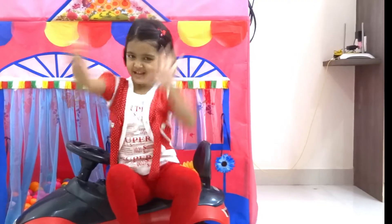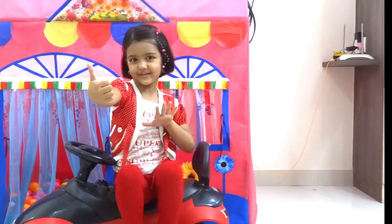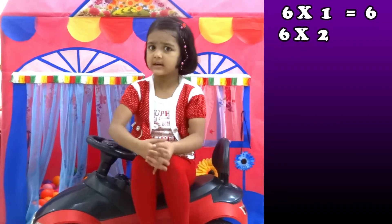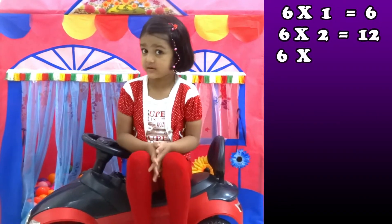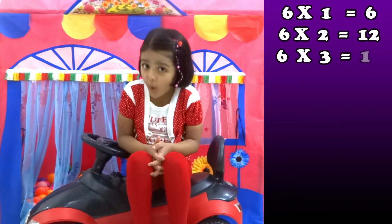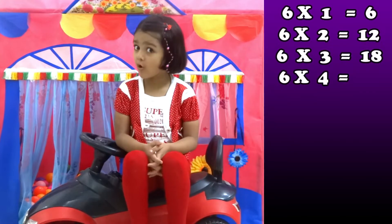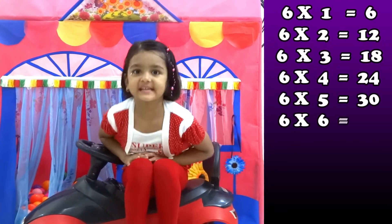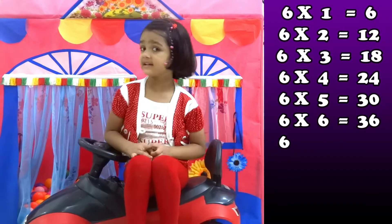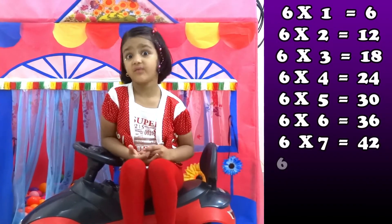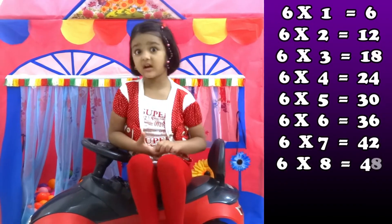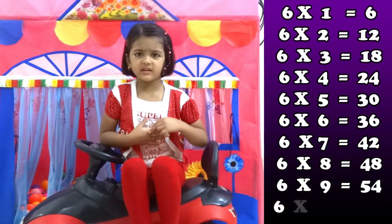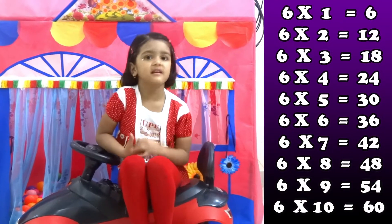6 six's are 50, 6 six's are 60. 6 one's are 6, 6 two's are 12, 6 three's are 18, 6 four's are 24, 6 five's are 30, 6 six's are 36, 6 seven's are 42, 6 eight's are 48, 6 nine's are 54, 6 ten's are 60.